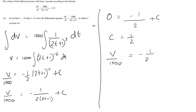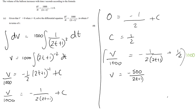So V/1000 = −1/(2(2t+1)) + 1/2. Multiplying everything by 1000 to get V in terms of t: V = −500/(2t+1) + 500. There may be a follow-up part asking for the volume at t = 4 or the time when V = 100 — you simply substitute the known value and rearrange to find the other.